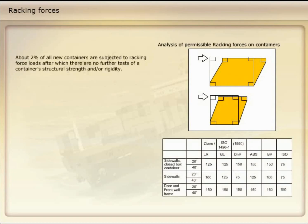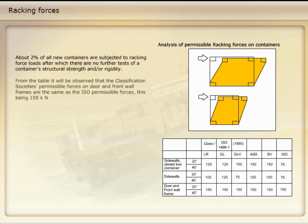About 2% of all new containers are subjected to racking force loads, after which there are no further tests of a container's structural strength and/or rigidity. From the table, it can be observed that the classification societies' permissible forces on door and front wall frames are the same as the ISO permissible forces, this being 150 kN.